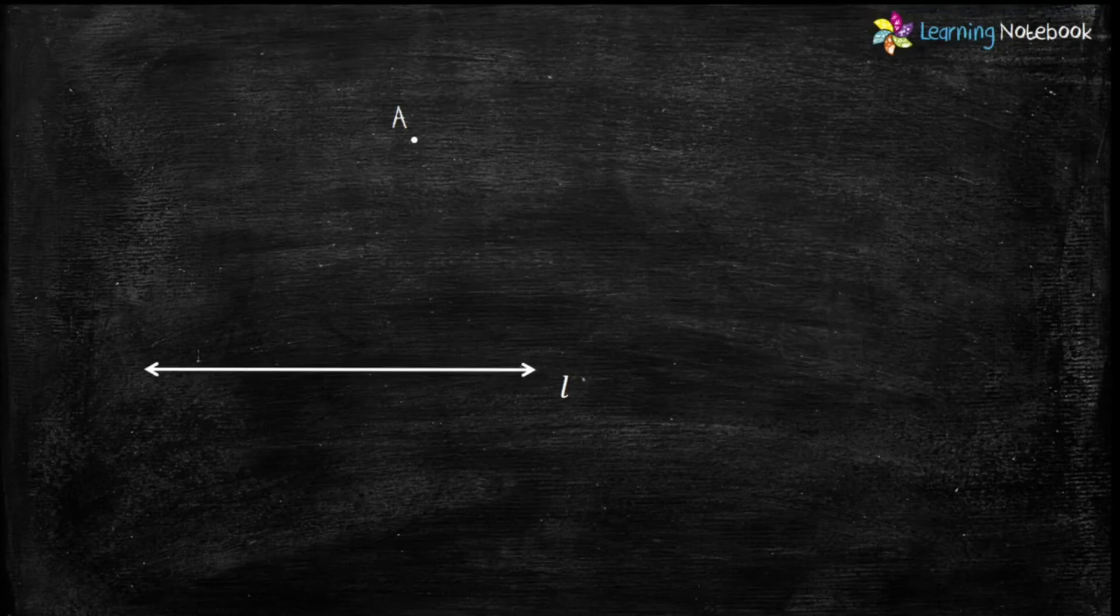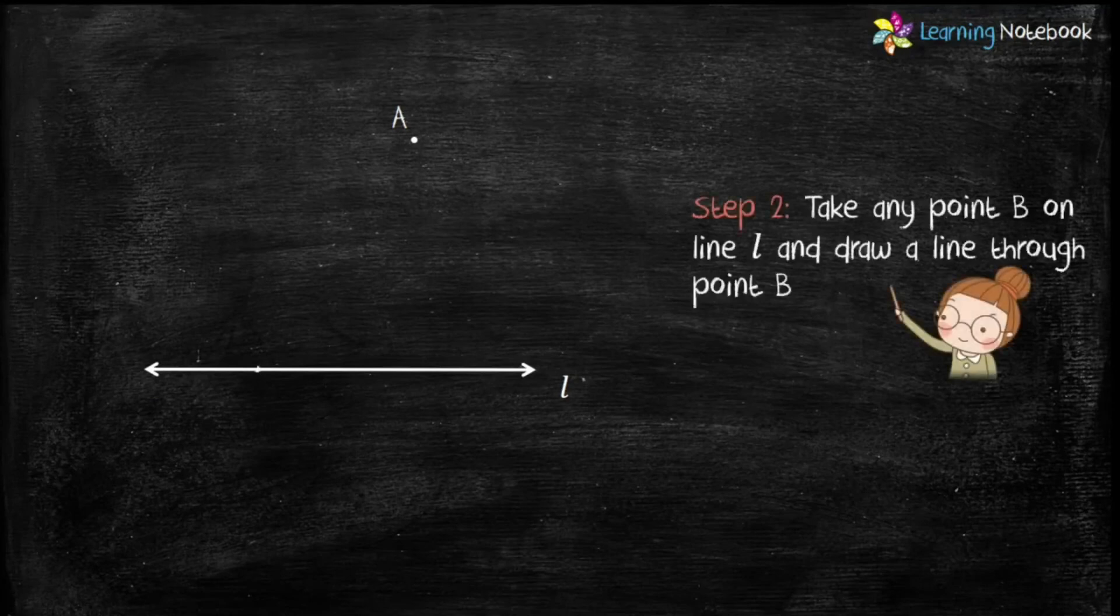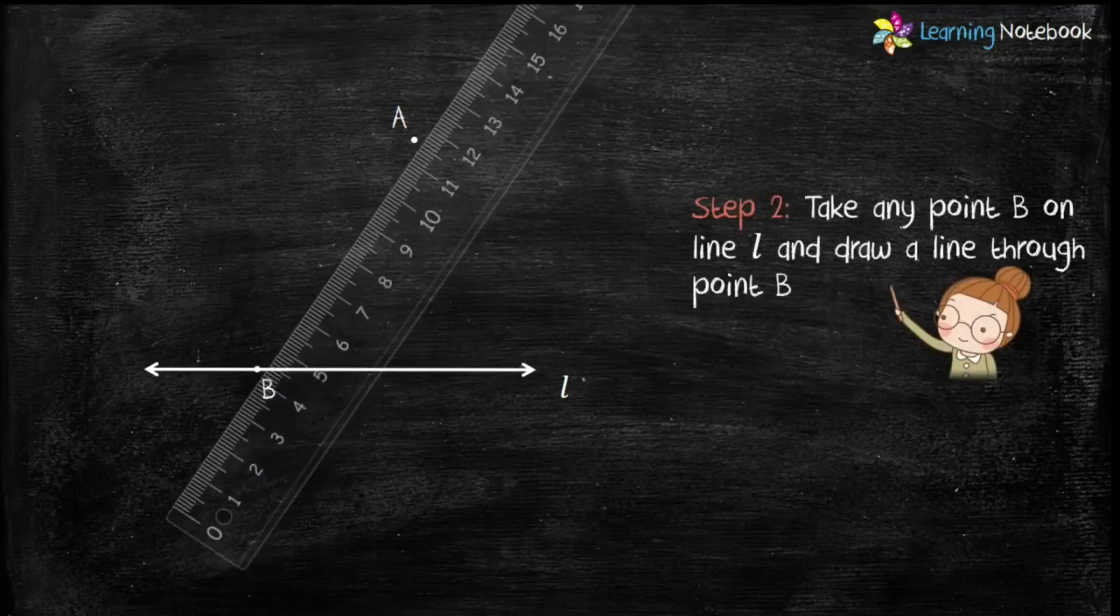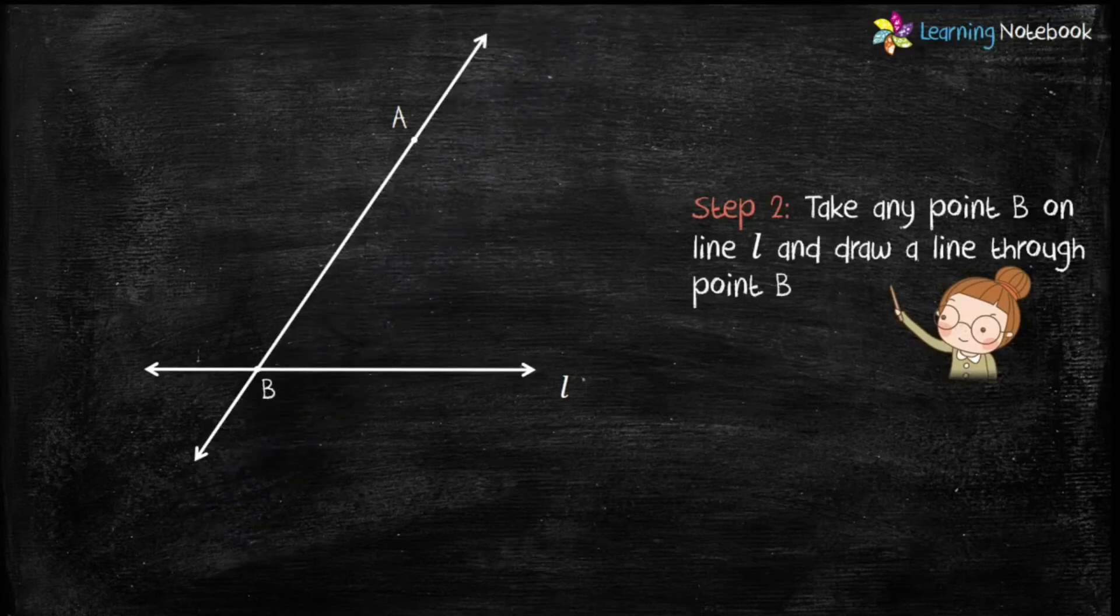Step 2 is take a point B anywhere on line L and draw a line through point B using a ruler.